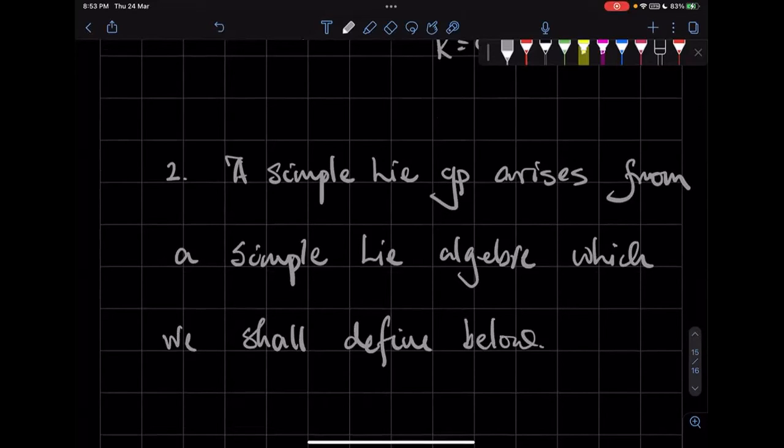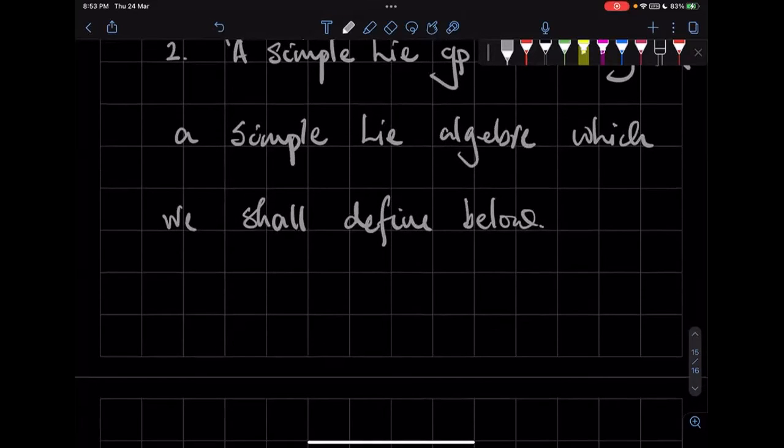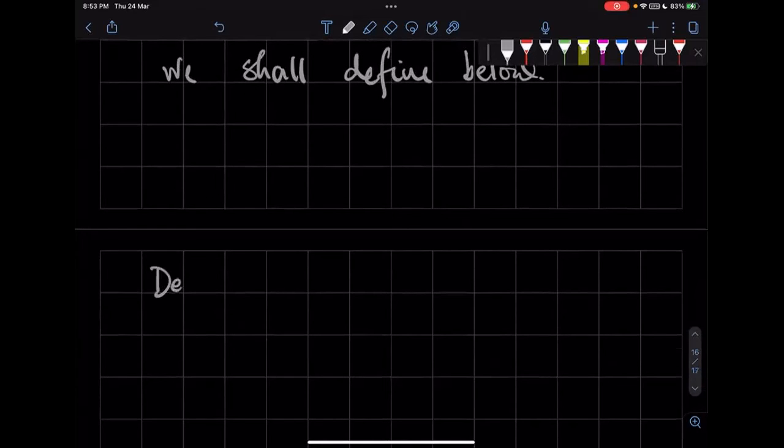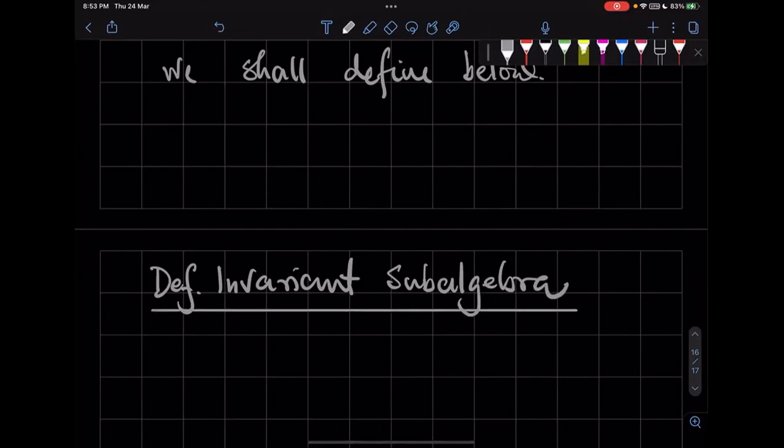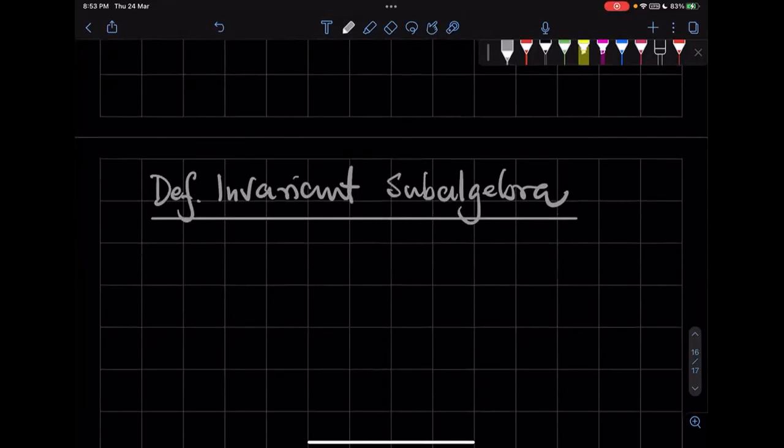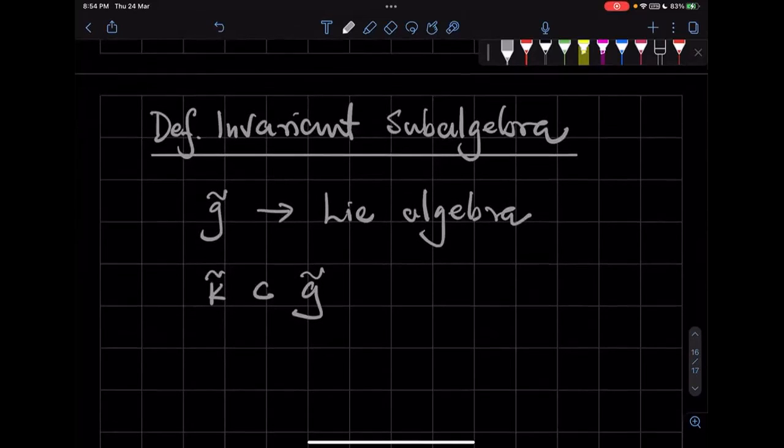So but before we define a simple Lie algebra let us define an invariant subalgebra. So the definition of an invariant subalgebra: suppose that G̃ is a Lie algebra and K̃ is some subset.